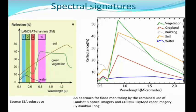Next is the spectral signatures for vegetation, cropland, building, soil, and water. The wavelength ranges from 0.5 micrometer to 2.0 micrometer, where 0.7 micrometer onwards is the IR region. Green vegetation has more reflection in the IR region, then cropland has less, buildings have still less reflection, soil has still less reflection, and water has very low reflection. All these things can be differentiated as their reflectance is recorded by the sensor, which can record across microwave, infrared, and visible radiation ranges.